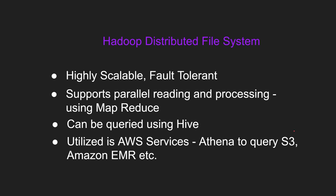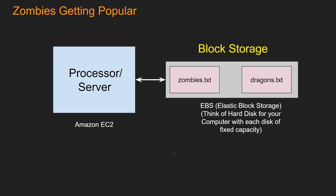This leads us to HDFS, or Hadoop Distributed File System. It is highly scalable and fault tolerant, and it supports parallel reading and processing using MapReduce. You can query the data using a technology called Hive, and it is utilized in AWS services such as AWS Athena to query S3, and Amazon EMR, or Elastic MapReduce.